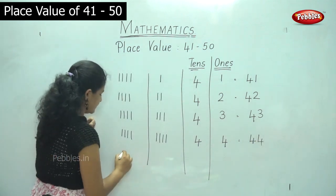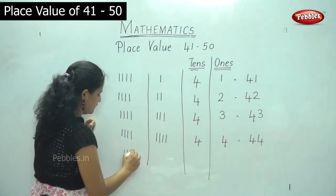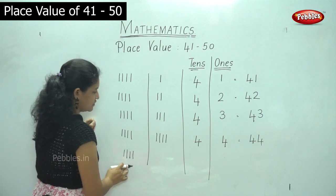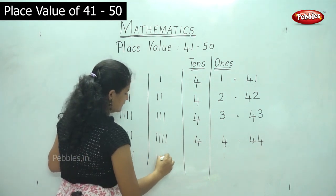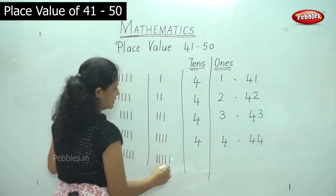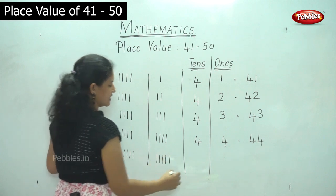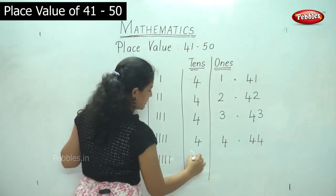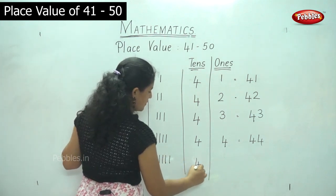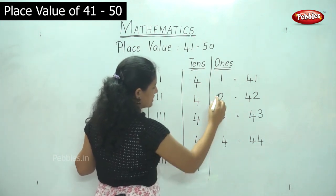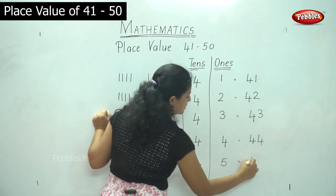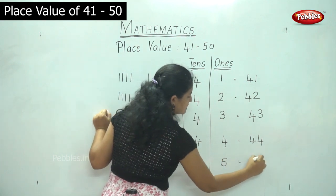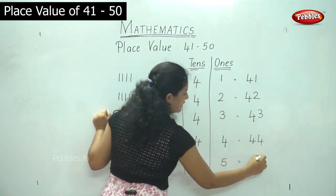Then the next number: I have 1, 2, 3, 4 — 4 tens — and in the ones place I have 1, 2, 3, 4, 5. So in the tens place I have 4 and in the ones place I have 5. That gives me the number 45.